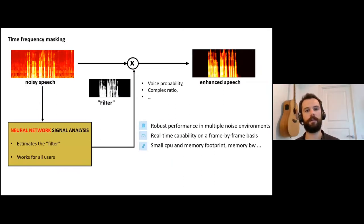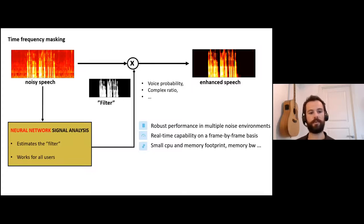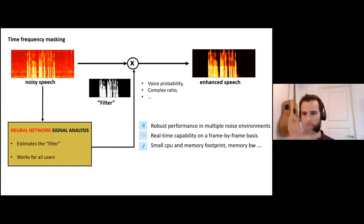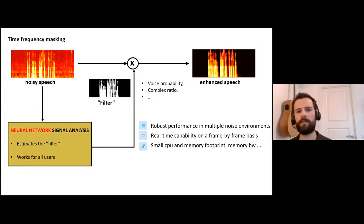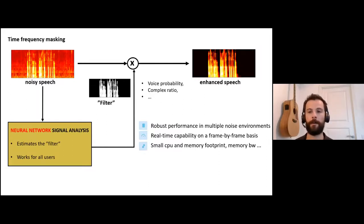We take each overlapping window, compute the FFT, rinse and repeat, and stack all these frames to create a spectrogram. This is an important step because this data is what the neural network will see. All parameters of the Fourier transform are very important: frame size, overlap, window type. The main technique we use at Jabra for AI denoising: from the noisy speech we send it to the neural network, which will estimate filters that work for all users and should perform well in all conditions.